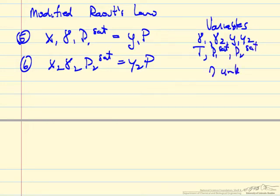We don't know p1 sat and p2 sat. So we have seven unknowns, right now six equations.